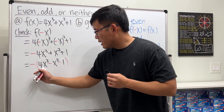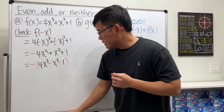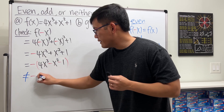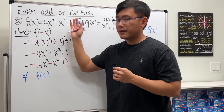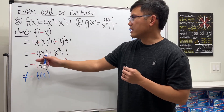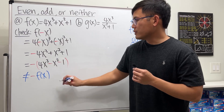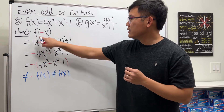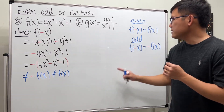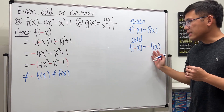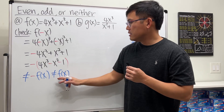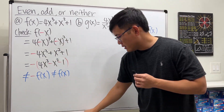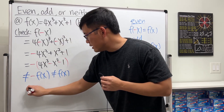This result is actually not the same as negative f of x, so it's not odd. And it's also not the same as the original f of x, so it's not even. Therefore, this function is neither even nor odd.